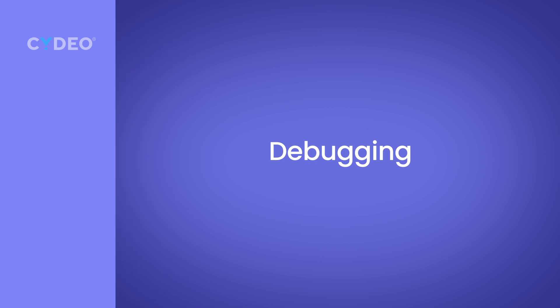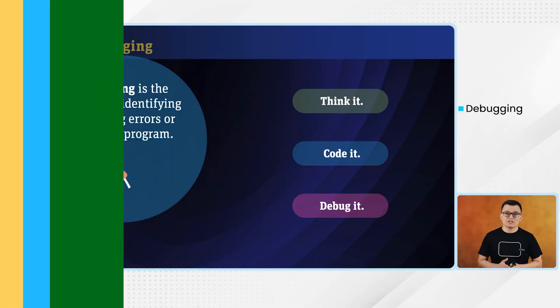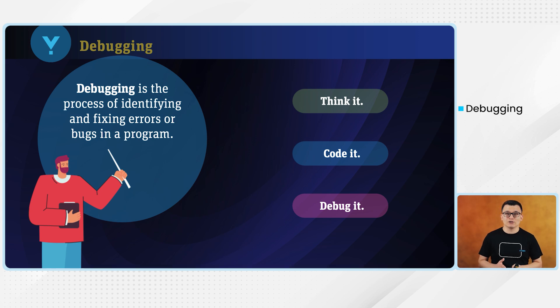Welcome everyone. In this video we are going to talk about the debugger tool of IntelliJ. But before we start using the debugger, you need to understand what the definition of debugging is. Debugging means the process of identifying and fixing the errors or bugs within our codes. So right after finishing writing your codes, in order to make sure there is no bug and your codes are working as expected, you need to debug it. By debugging, we will be able to determine whether there is a bug or error within our codes.